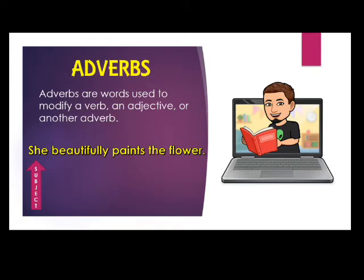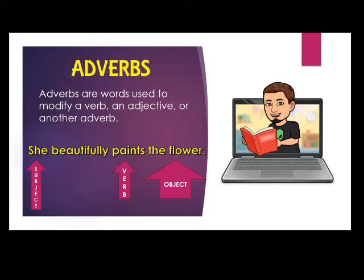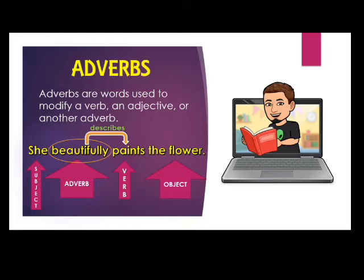The pronoun 'she' is the doer of the action in the sentence. The subject does the painting, so 'paints' is our verb. The receiver of the verb — the object — is 'the flower.' What is left in the sentence aside from the SVO is the word 'beautifully,' and that is what we call the adverb. Now, 'beautifully' modifies the word 'paints.' It describes how the subject paints the flower — it answers the question 'how.' How did she paint the flower? The answer, which is the adverb, is 'beautifully.'